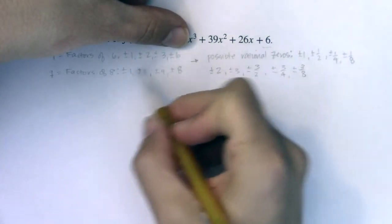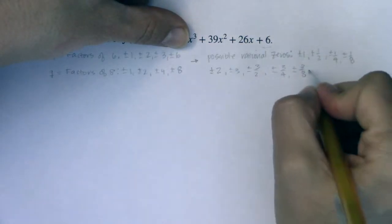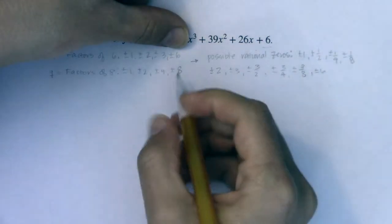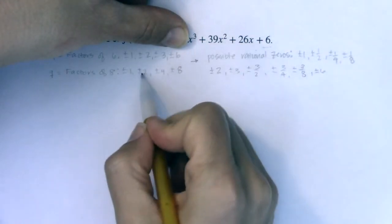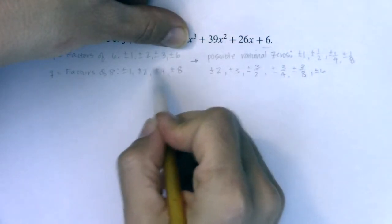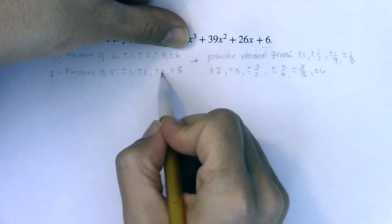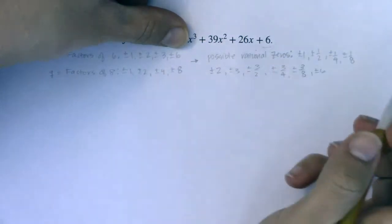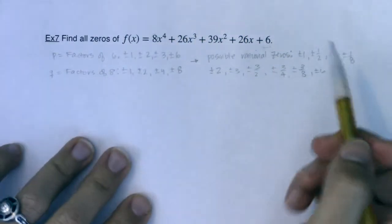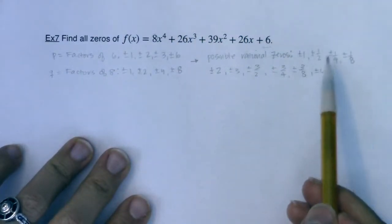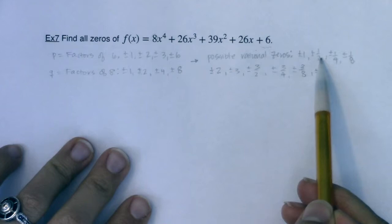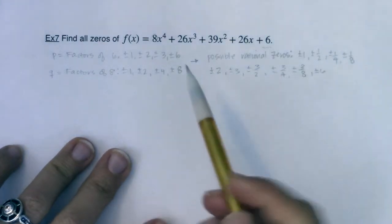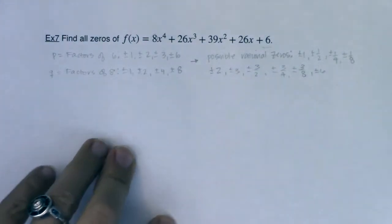And then let's do six. Six over one is six. Six over two is three. Six over four is three halves. And this is three fourths. So how many did I narrow this down to? Two, four, six, eight, ten, twelve, fourteen, sixteen, eighteen, twenty. Just 20.